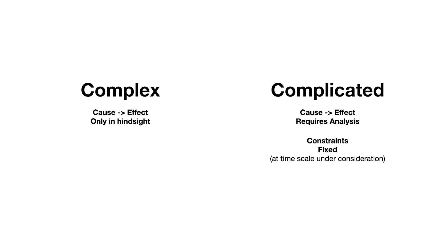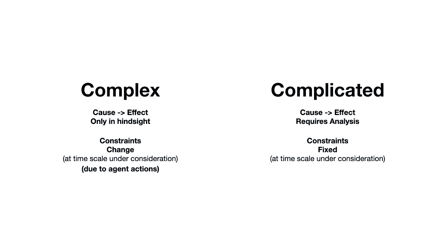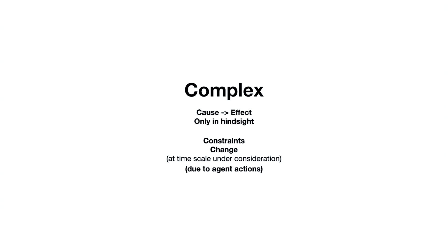You can probably guess the nature of constraints in a complex system: constraints change under the time scales that we're considering acting in. In particular, they change due to agent actions. A pursuit of a career changes our constraints — we pursue opportunities associated with that career and not another. Attending this talk changed your constraints. If you're on call getting paged, that changes your constraints. Almost every action we take as people changes some constraints in some way.